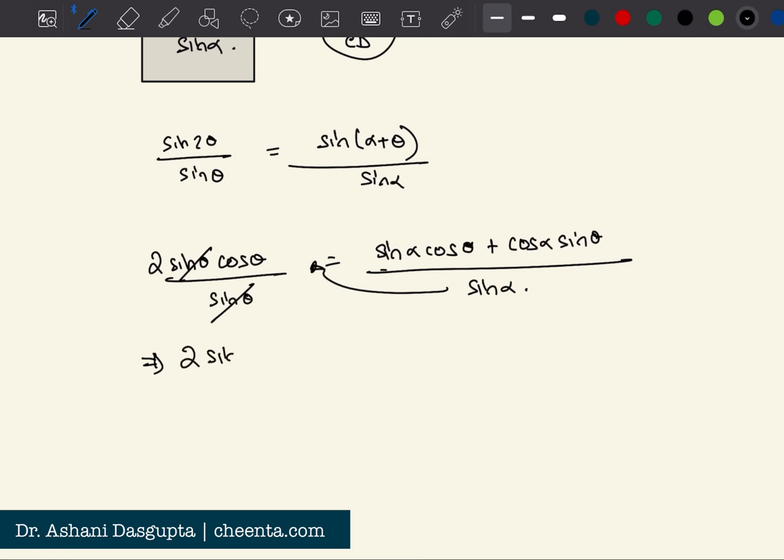So I have two sine alpha cos theta equals sine alpha cos theta plus cos alpha sine theta. Now I can cancel off sine alpha cos theta - there are two of them on the left hand side - and bring it to the right. So I'll have sine alpha cos theta minus cos alpha sine theta equal to zero.